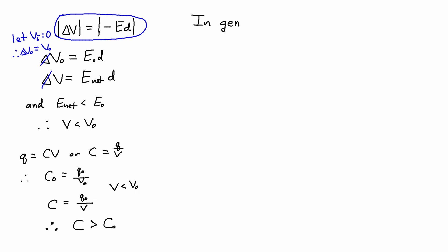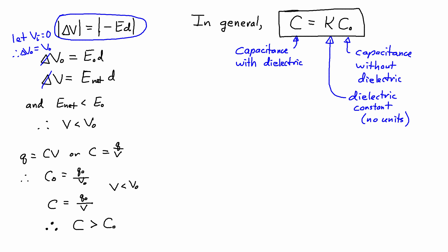In general, we get this equation, C is equal to kappa times C0, where C0 is the capacitance with no dielectric, and kappa is something called the dielectric constant. And kappa has no units, because it's just a multiplier. We have capacitance on both sides here. And just as an example, here are some dielectric constants for a few common materials.